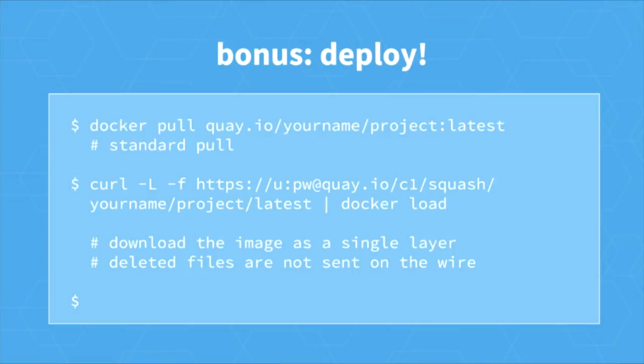As a bonus, once we're done building your code, you might actually want to do something with that image — you might want to get it on some machines. Of course you can do a docker pull like anybody would with one of these images. We give you all the image layers, or the calculated delta if you've already got some of the layers on your production machines. But we also have a couple of other interesting ways to get the built image on your machines.